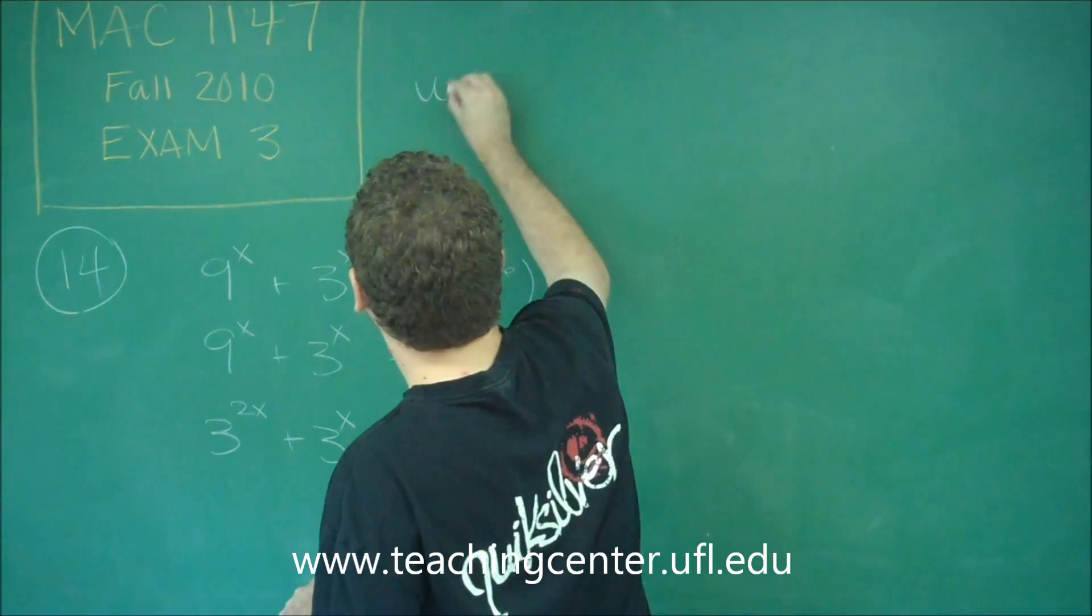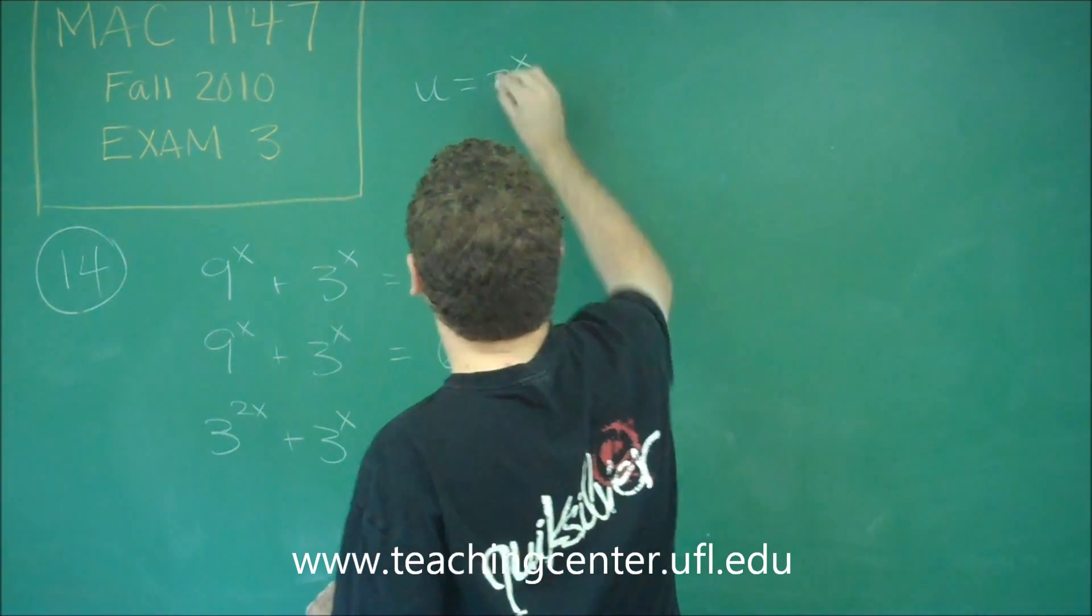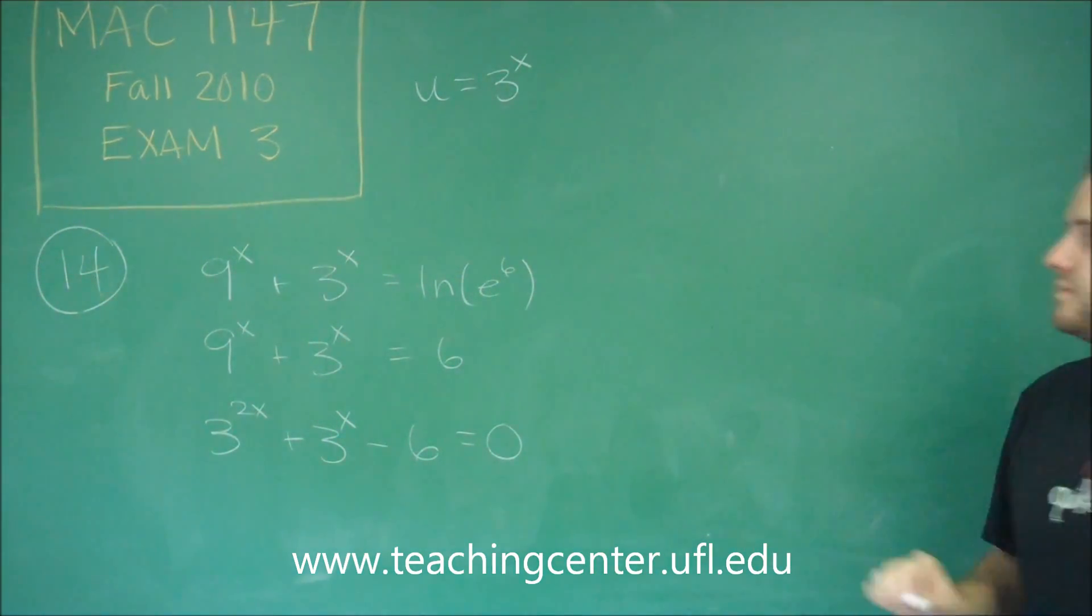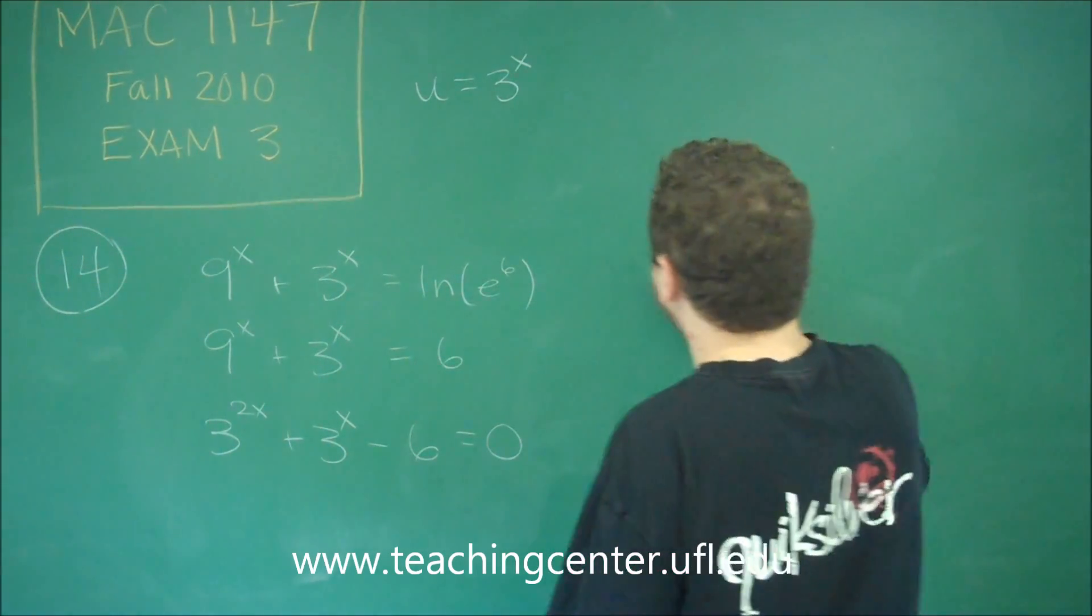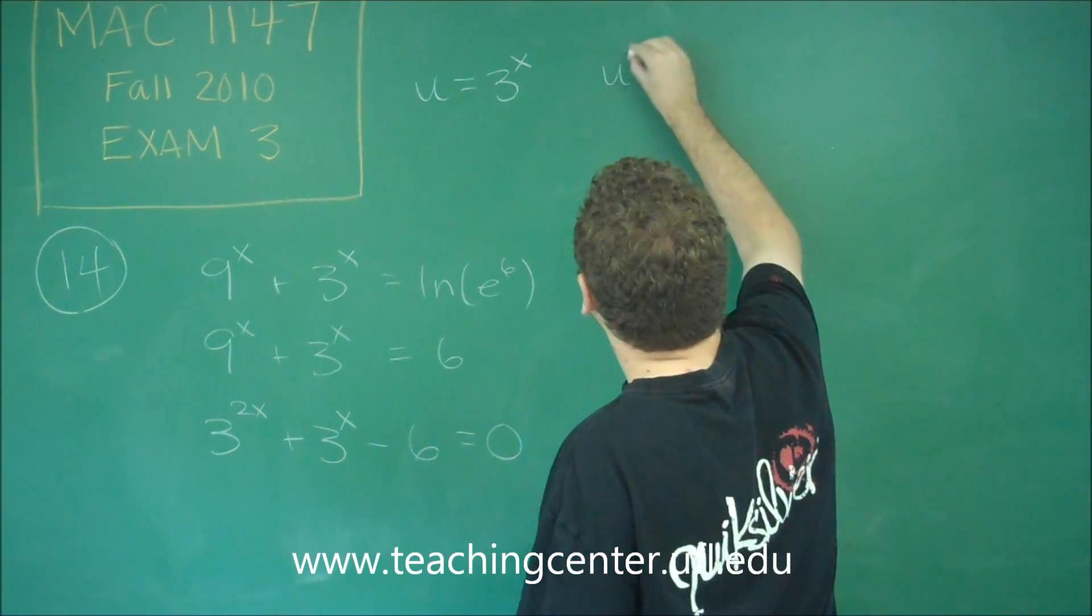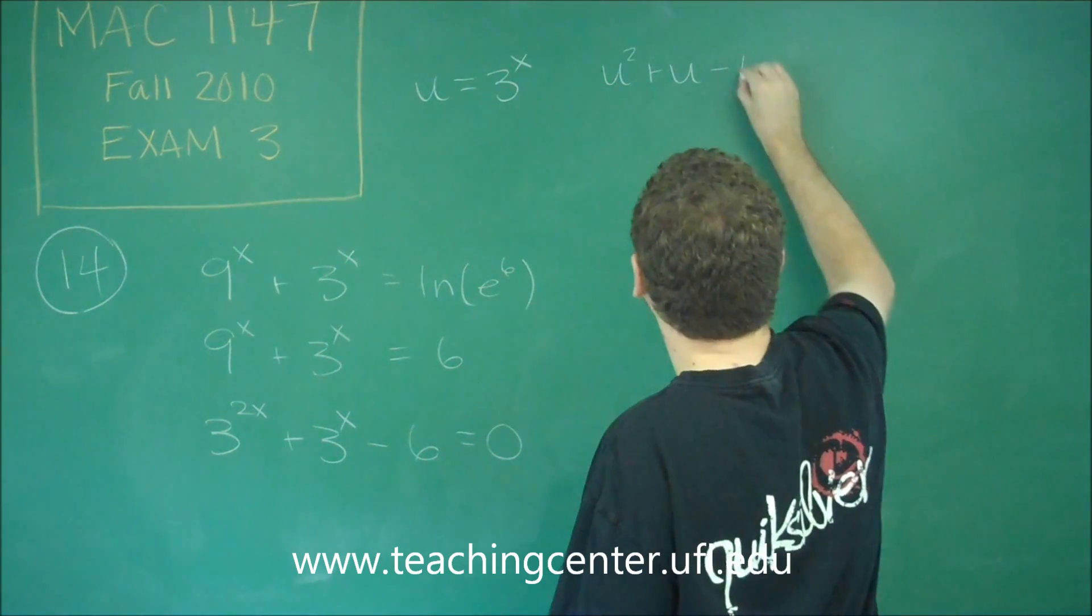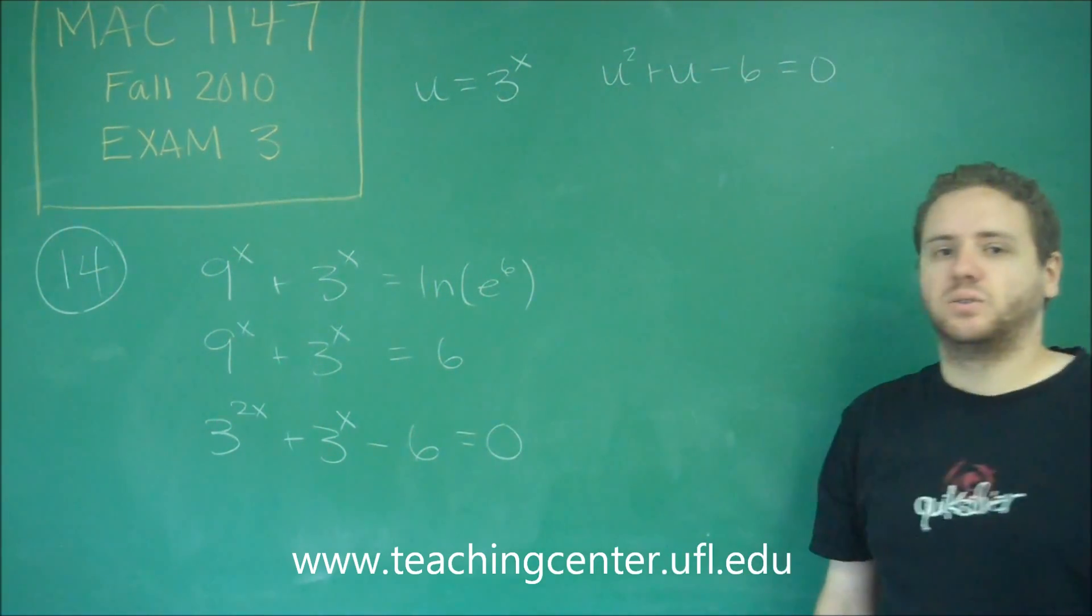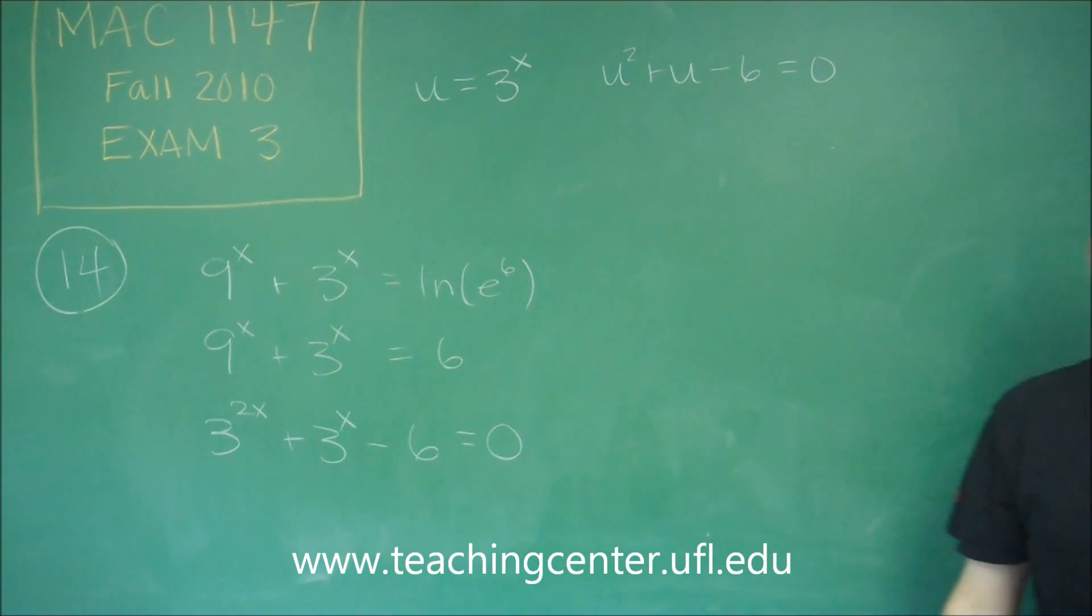So what we're going to do is say u = 3^x. Let's let u be our substitution. So our equation now becomes u^2 + u - 6 = 0. And that's just a standard quadratic that we can solve, or we can factor.